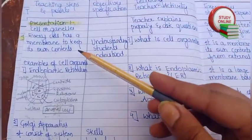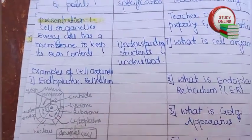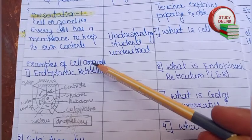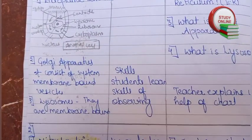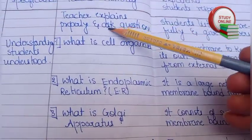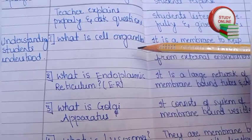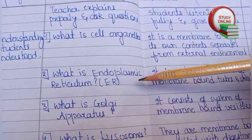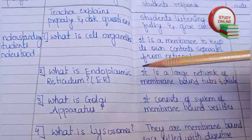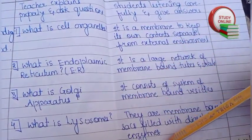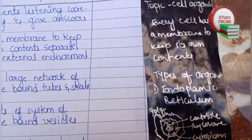Now here is Presentation 1. For that we have to explain everything properly to students for five to six minutes. After that we have to ask questions related to that. I have added four questions: What is cell organelles? What is endoplasmic reticulum? What is Golgi apparatus? What is lysosomes? And here is the expected answer that we expect from students. Here you can see the blackboard work.